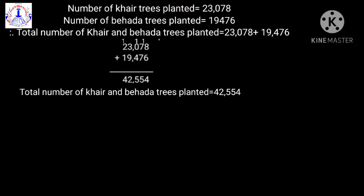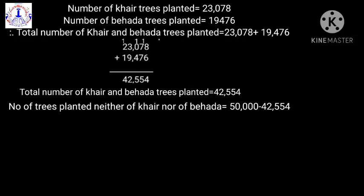Now, to find the number of trees that are neither of Kher nor of Behera, we have to subtract the total number of Kher and Behera trees planted — that is 42,554 — from the total number of trees, that is 50,000. So: neither Kher nor Behera trees = 50,000 minus 42,554. When we do this subtraction, we get the answer 7,446.